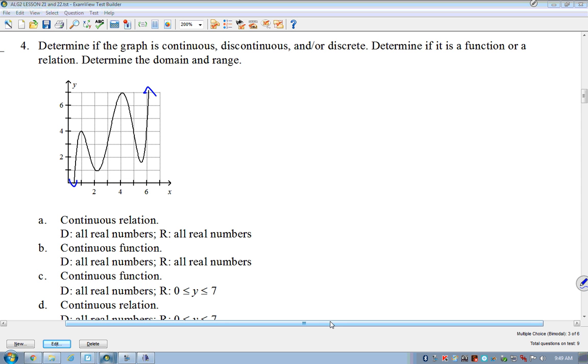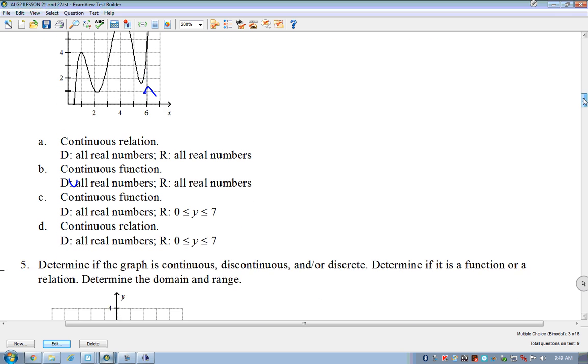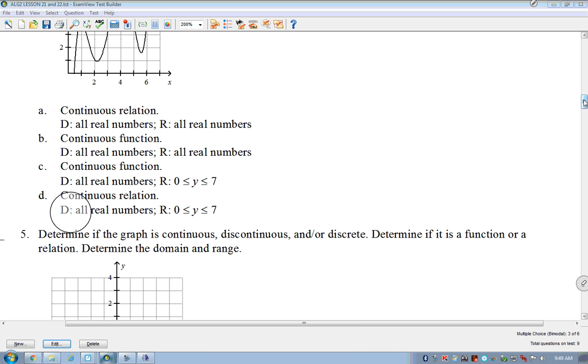So you'll notice that some of these look really, really similar to each other and how they're worded. So be careful if you see this question on a test that you pick out all parts. We want a continuous function. Notice that B and C are both continuous functions. We want all real numbers, all real numbers. So we want B as an answer. Don't pick the first one that says continuous function. Don't pick the first one that says all real numbers, all real numbers. Because a lot of people pick A instead of B because they see all real numbers, all real numbers. They see continuous. They don't see the difference between relation and function.